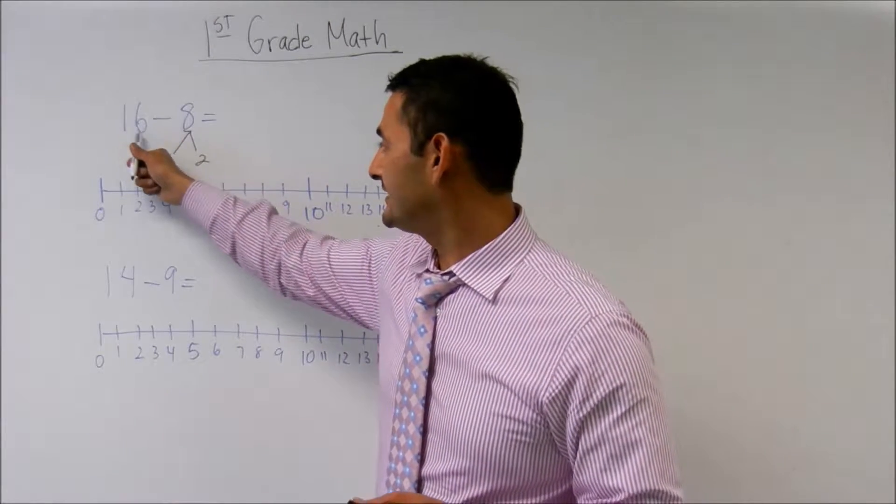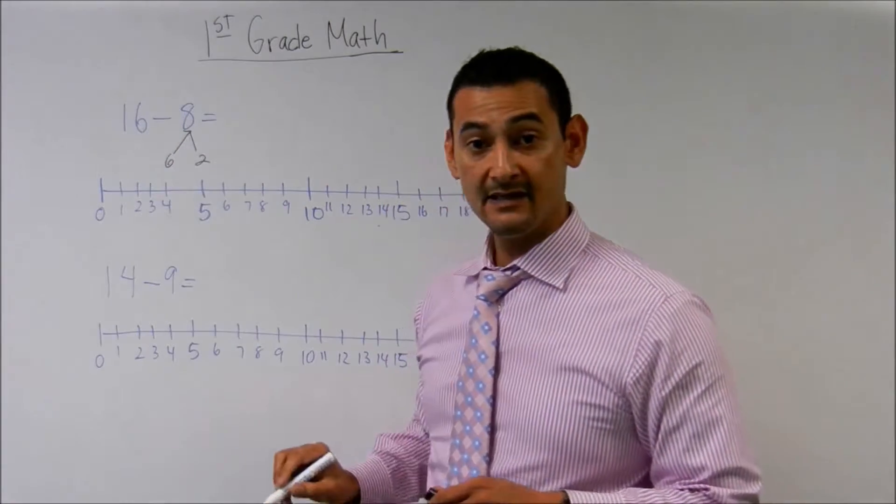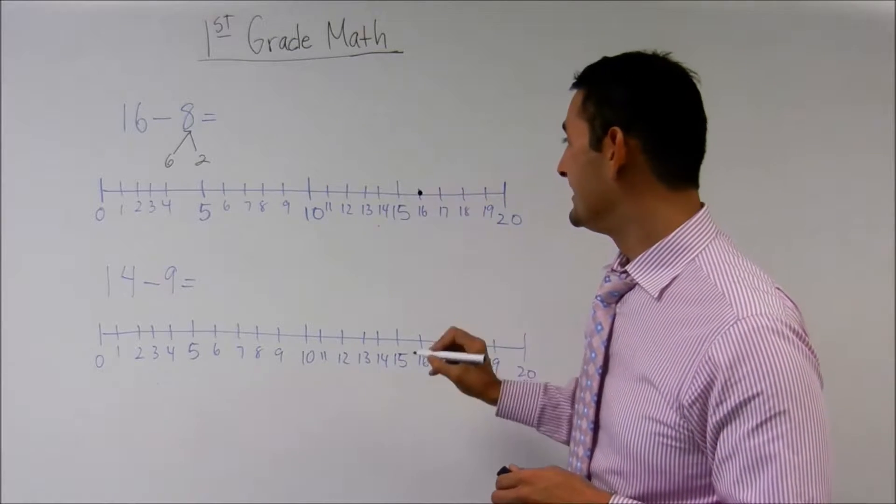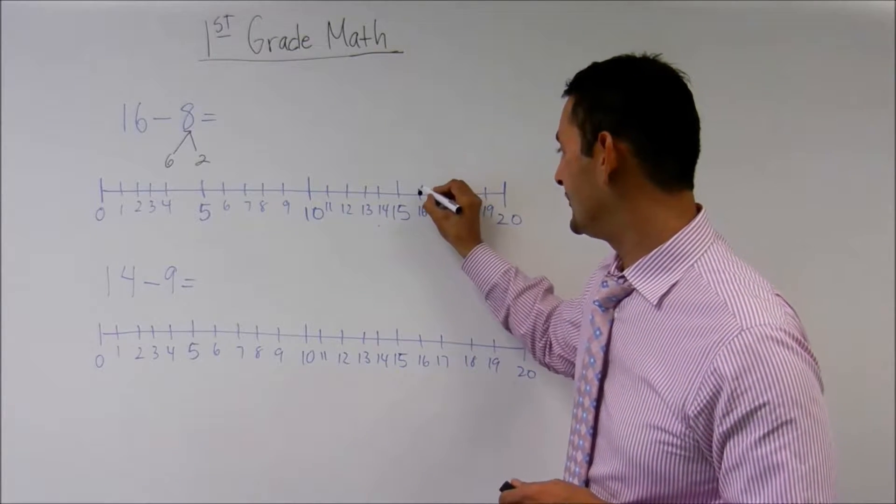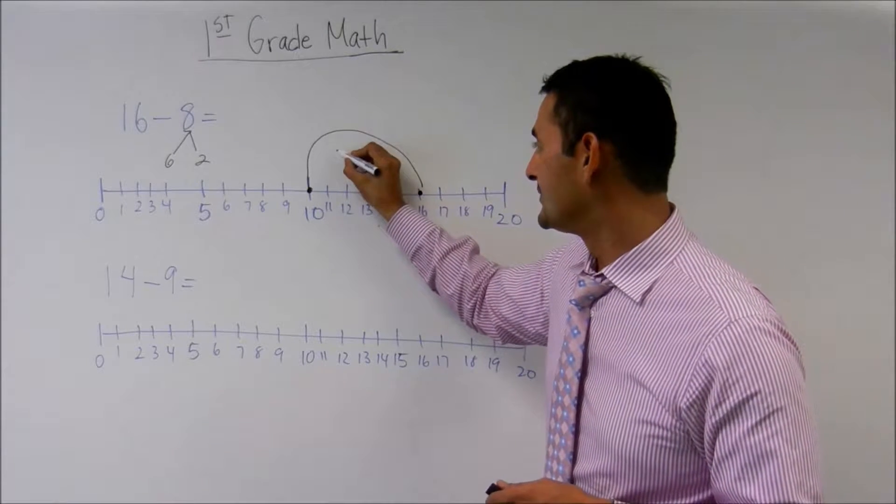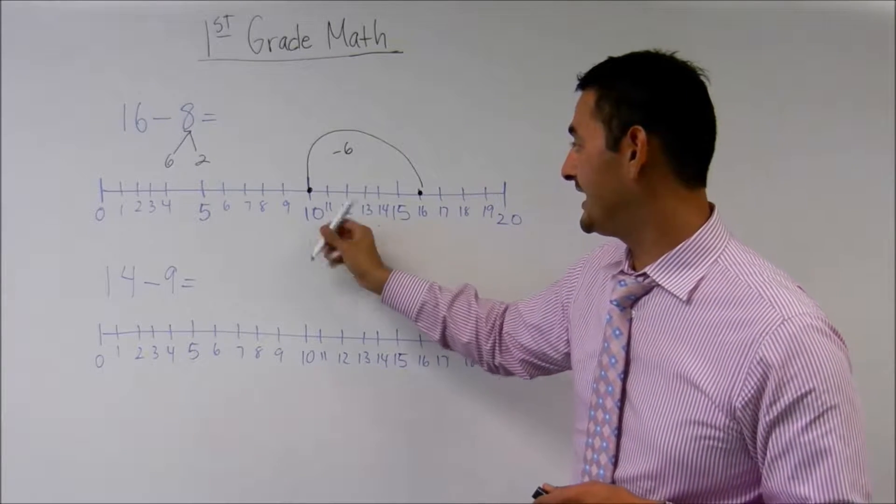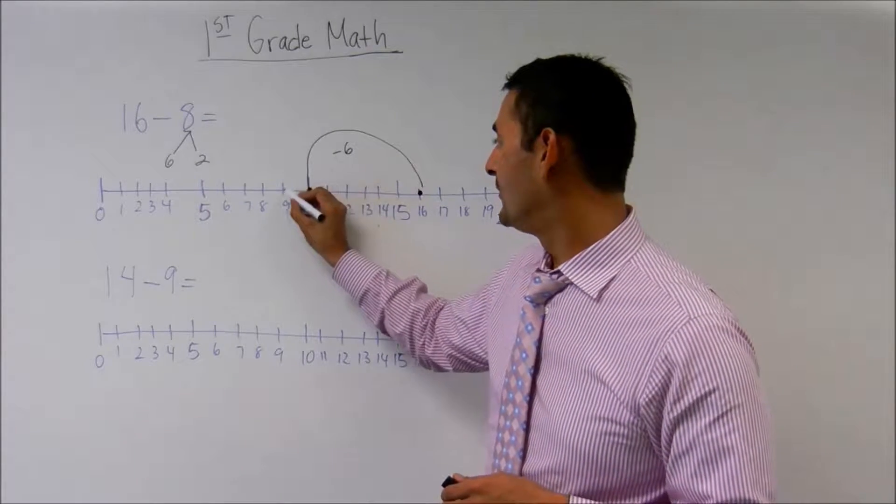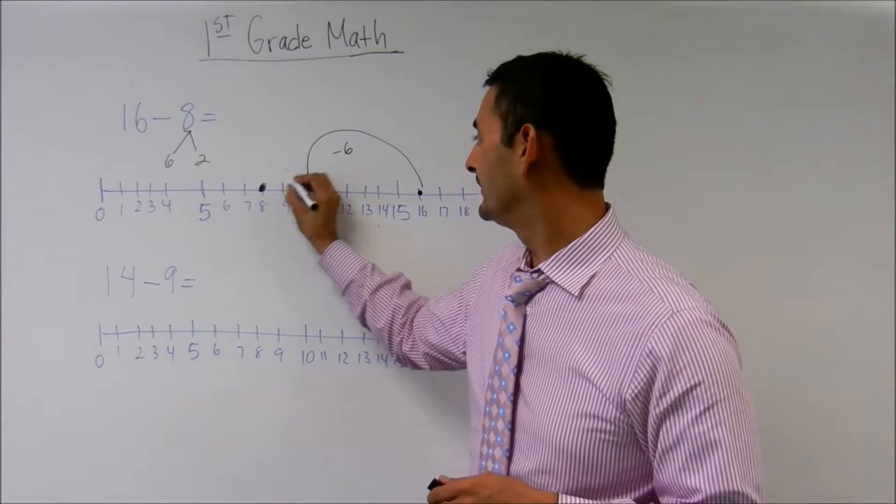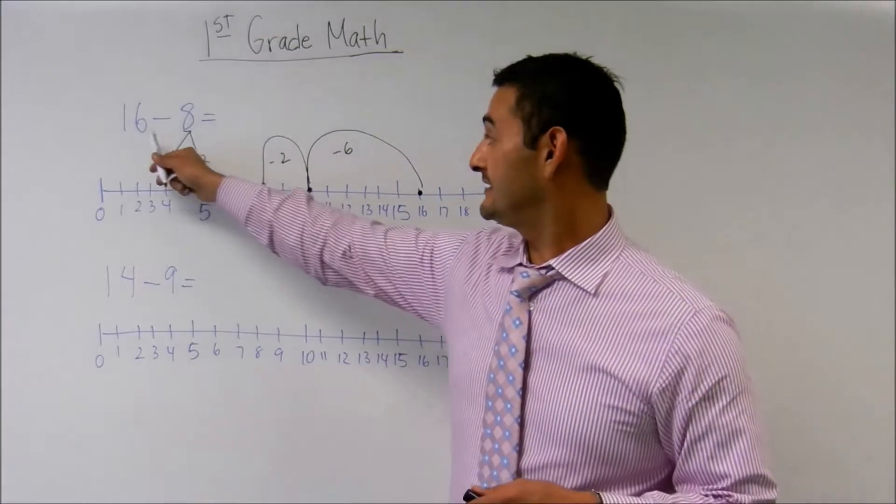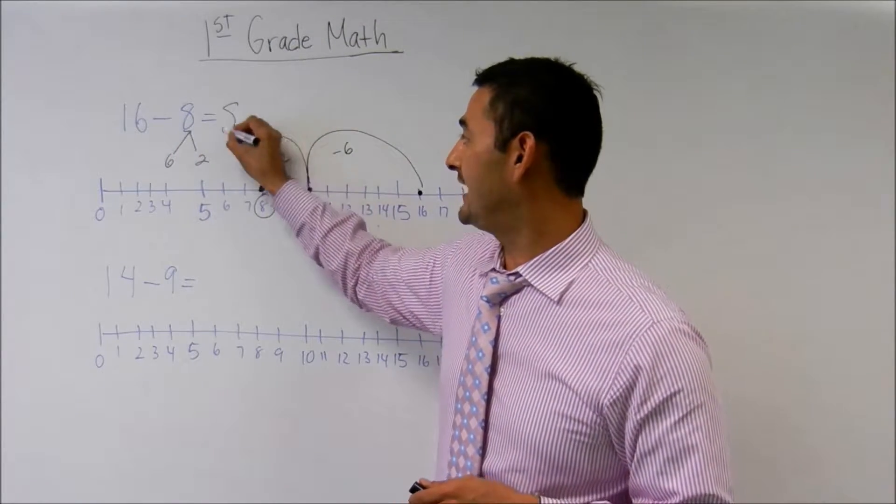Now can I do 16 take away 6? Sure I can. So let me go ahead and go to my number line. 16 take away 6, I know that it equals 10. I'm going to jump all the way right here. So that's minus 6 equals 10. And now I just have to do minus 2 more. 1, 2. And I'm right there, I'm going to jump here, so minus 2 more, it equals 8. 16 take away 8 equals 8.